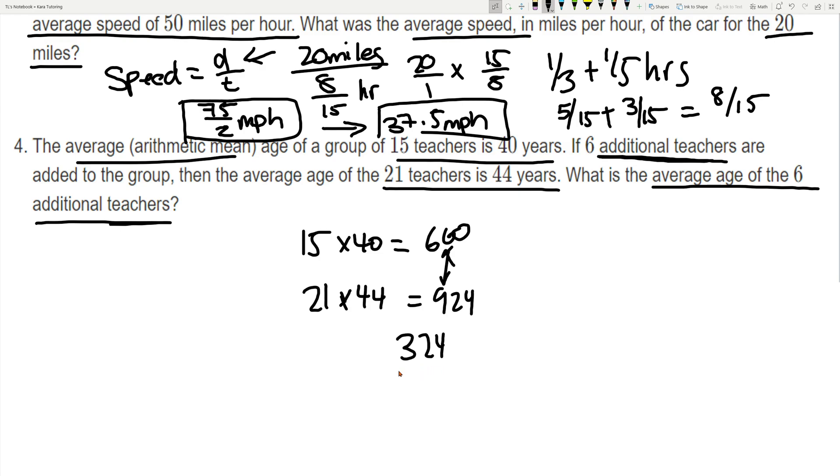So that's going to be 324 over 6 which is equal to 54. So that's all I have for today. If you have any questions be sure to leave them in the comments below. Also another reminder, please check out the description in order to sign up for CARA tutoring if you're interested in our tutoring services. That's all I have for today. So see you guys next time.